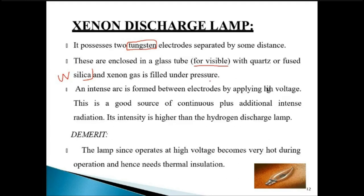In the xenon discharge lamp, xenon gas is used instead of hydrogen. An intense arc is formed between electrodes by applying high voltage. This is a good source of continuous and intense radiation. The intensity is higher than the hydrogen discharge lamp simply because xenon gas has more electrons that can be excited. Otherwise, the construction is very much similar to the previous one.